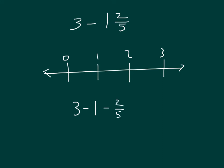So if we take away that 1 first, we would actually travel from 3 all the way back to 2 to begin with. So 3 minus 1 is 2, minus 2 fifths. So we've rewritten that so that we're not subtracting a mixed number now. We're only subtracting a fractional part.